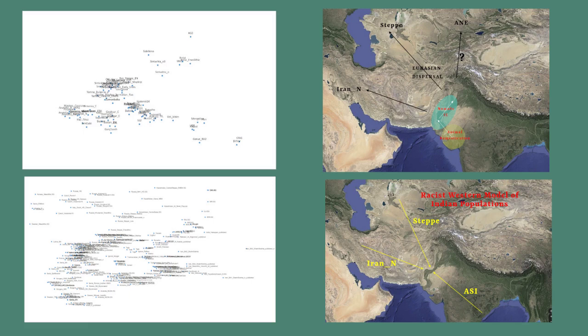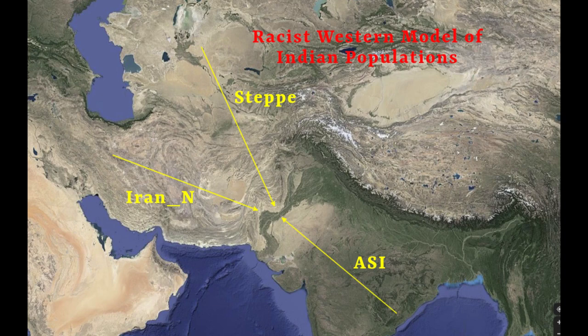Let's look at what the Aryan Migration Theory actually is. Looking at this map, there are three arrows going into the region of the Indus River - currently in Pakistan - but this applies to all of India and Pakistan. What they're saying is that we have DNA from the Steppe, from IranN, and from ASI. So most South Asians are a mixture of ASI, IranN, and Steppe, and they claim that IranN and Steppe people invaded or migrated to India where ASI-type DNA already existed.